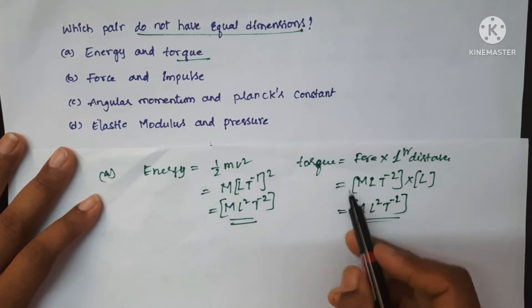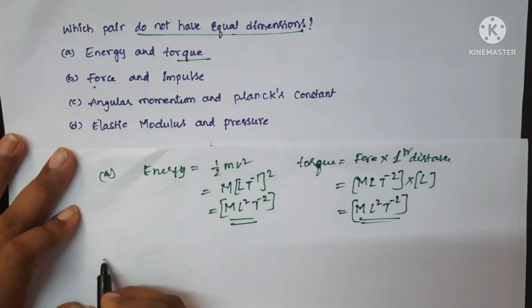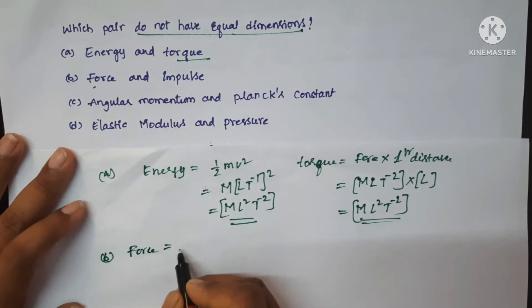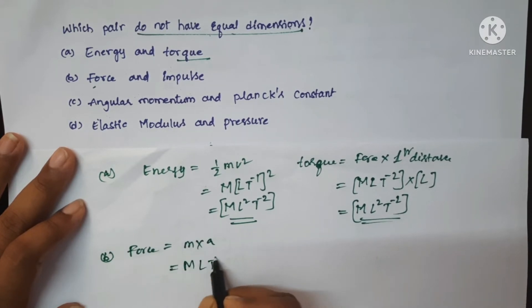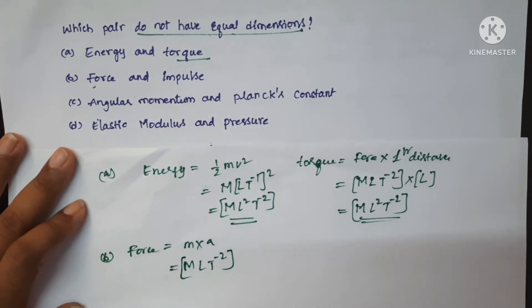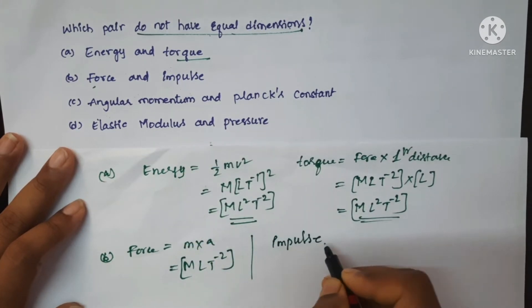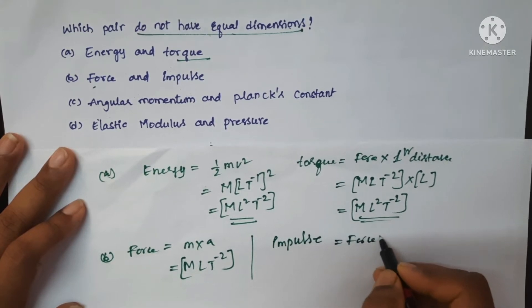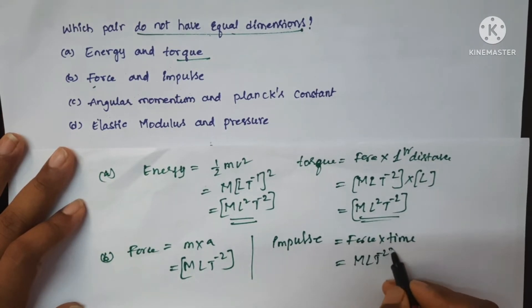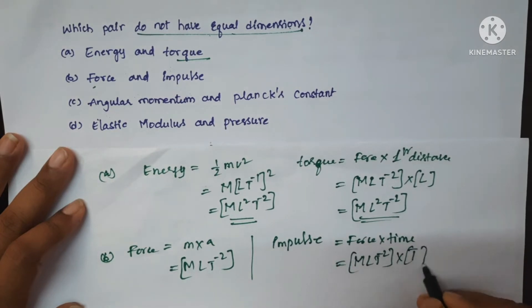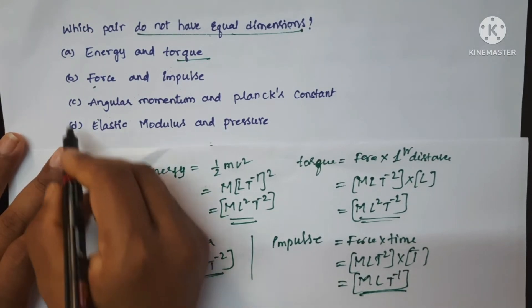Energy and torque both have the same dimensions, but we have to find the pair that does not have equal dimensions. Let's check force: F equals mass into acceleration, which is M into L T power minus 2, giving M L T power minus 2. For impulse — formula is force into time. Dimensions are M L T power minus 2 multiplied by T, which gives M L T power minus 1. Force and impulse are different, so B is the correct option.